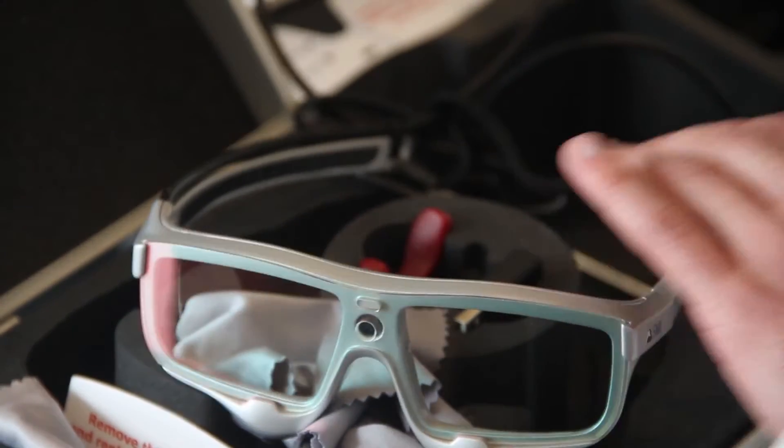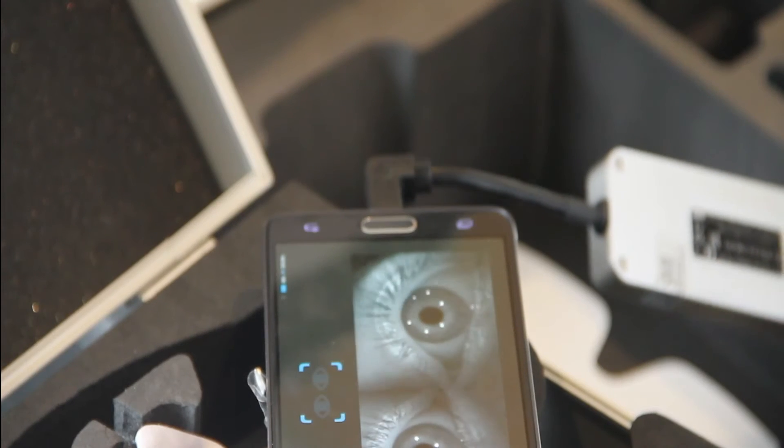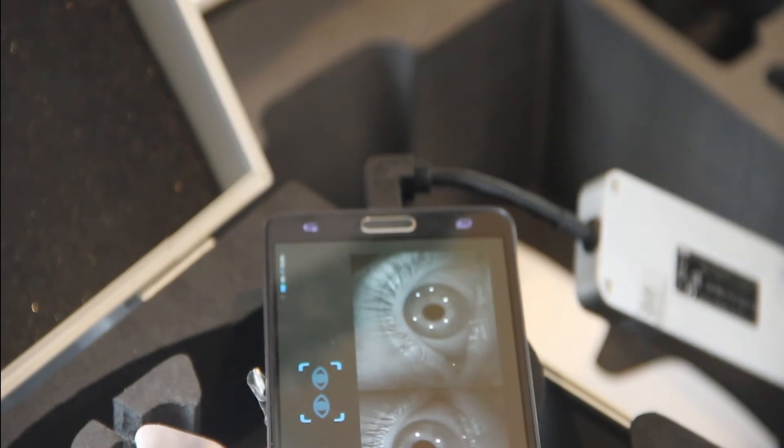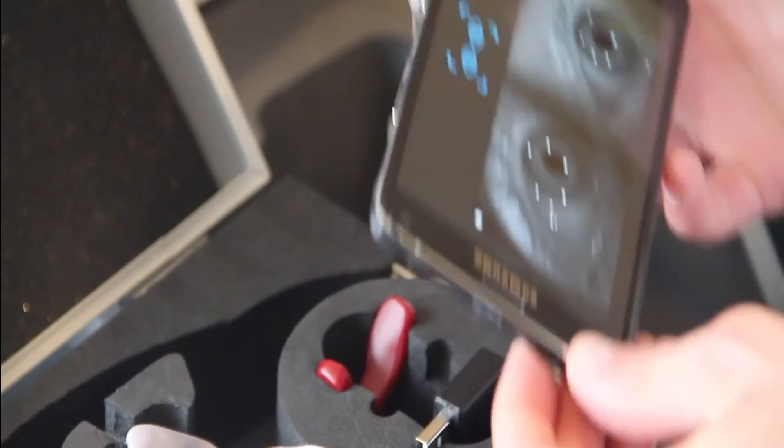When you wear the eye-tracking glasses, you first have to calibrate them to the individual pair of eyes. What it does is record everything the participant wearing them sees and hears, as well as their fixation, which is the main point of the glasses.